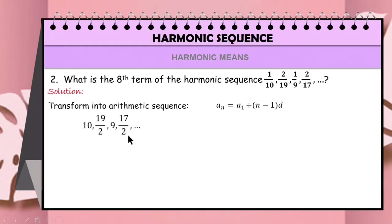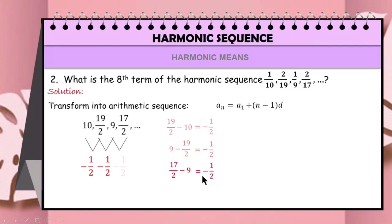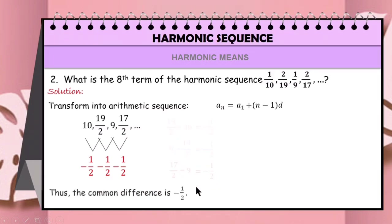Remember that the common difference is equal to a term subtracted from the previous term. So, 19/2 minus 10 equals −1/2. Then 9 minus 19/2 is −1/2. And 17/2 minus 9 is also equal to −1/2. Thus, the common difference d is equal to −1/2.